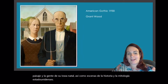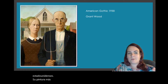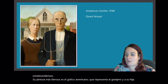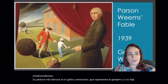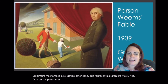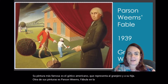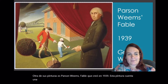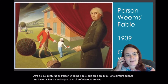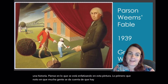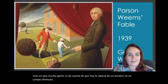His most famous painting is American Gothic, which depicts a farmer and his daughter. Another one of his paintings is Parson Weems' Fable, created in 1939. This painting tells a story. Think about what is being emphasized in this painting. The first thing that I noticed, and that a lot of people notice, is that there is an old man's head on a tiny body — and hopefully you have seen that face before.